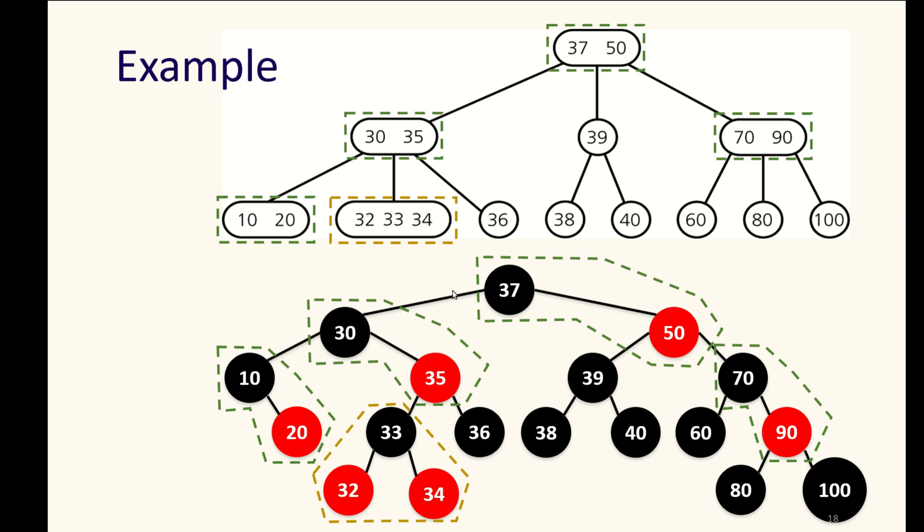So from the root to get to any leaf takes stepping through the root as one black node and then two more black nodes.